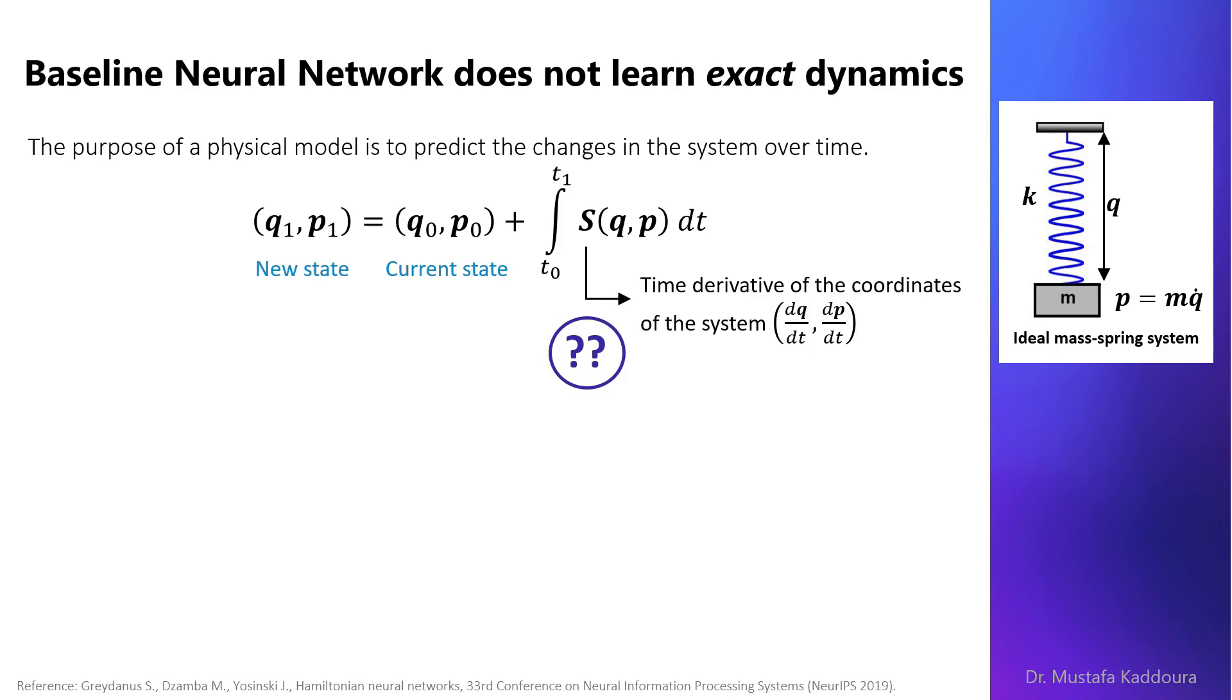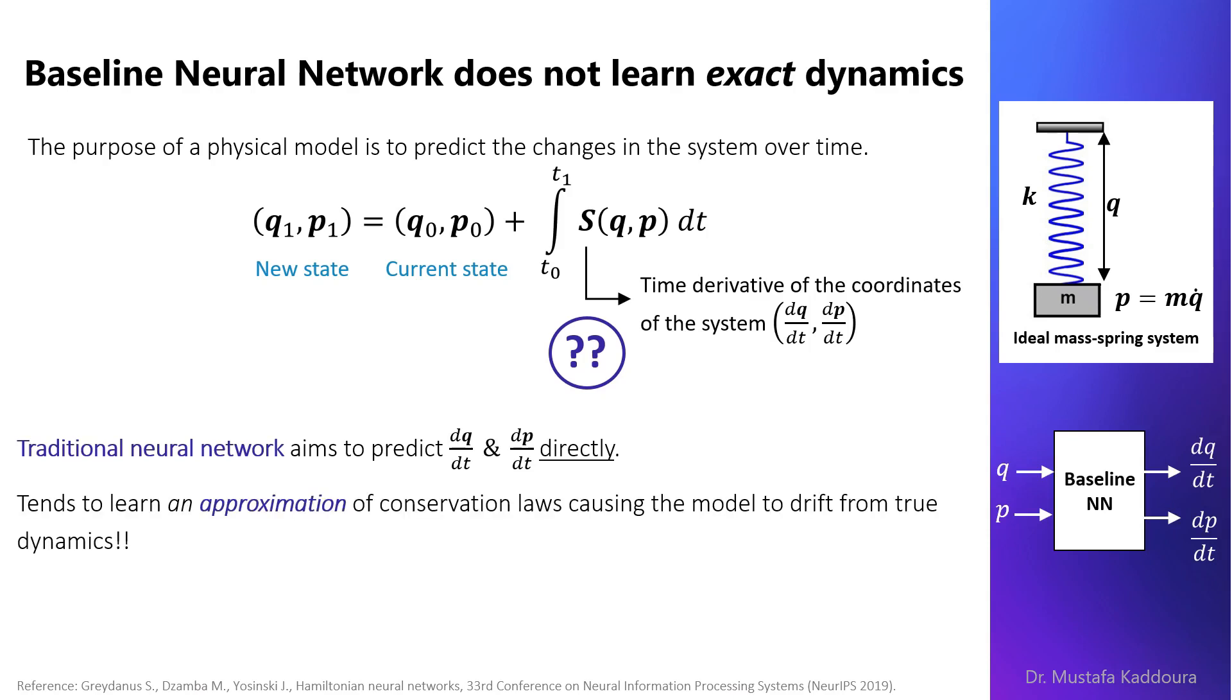Traditional neural networks aims to predict the time derivative s directly. This results in learning approximation of the conservation laws causing the model to drift from true dynamics.